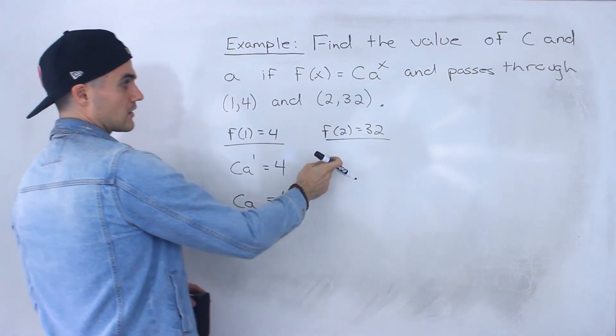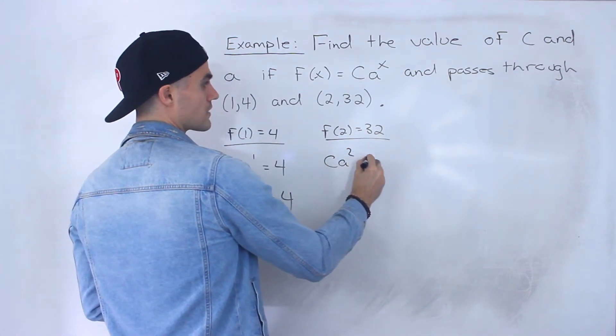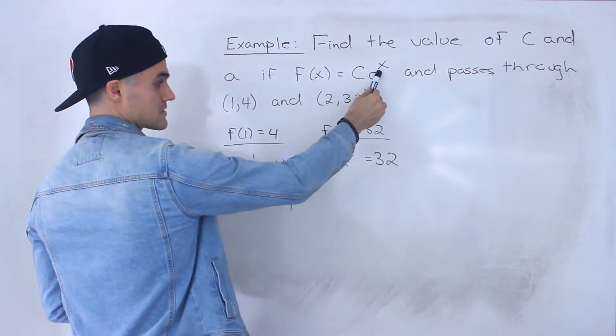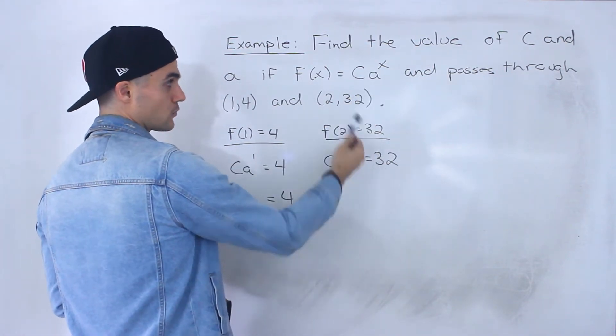And then over here, we would have c a squared equals 32. If we plug in 2 for x, that has to equal 32.